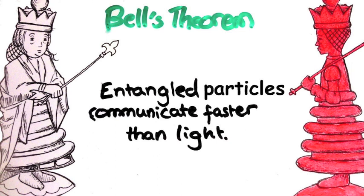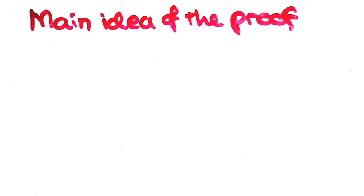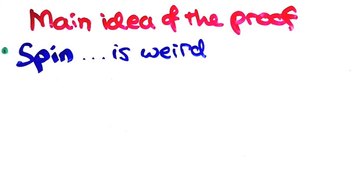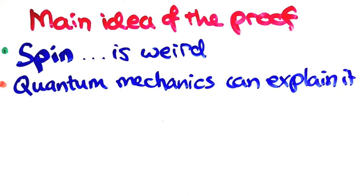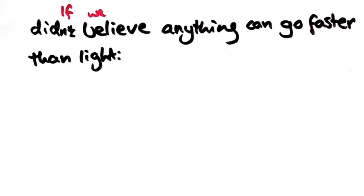Last video I told you about something called spin and some weird experimental facts about it. I won't show you how, but it is possible to explain spin in the framework of quantum mechanics. However, say we didn't believe that anything could go faster than light. Then because of EPR, quantum mechanics couldn't be true.